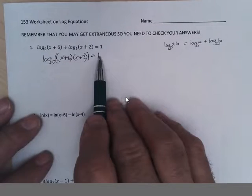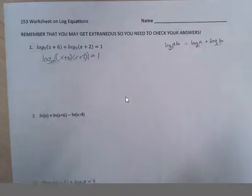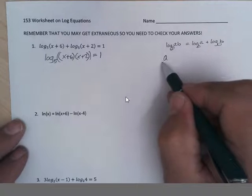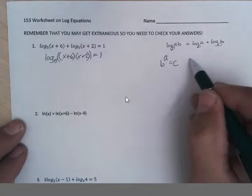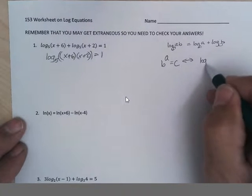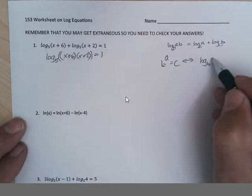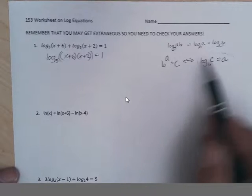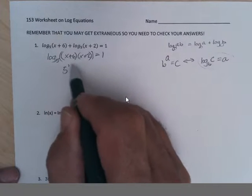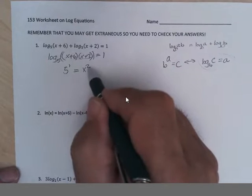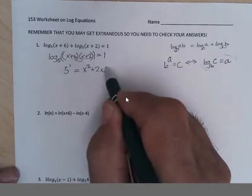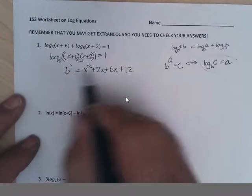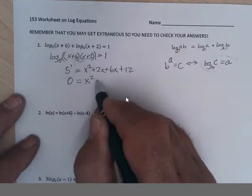If you got a single log equal a number, you can change it from a log equation to a power equation. That says if you got b to the a equals c, that changes to log base b of c equals a. So it becomes 5 to the 1 equals these two multiplied, which is x squared plus 2x plus 6x plus 12.